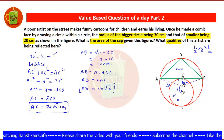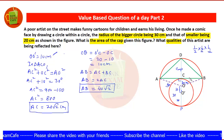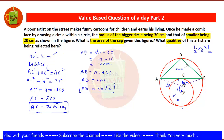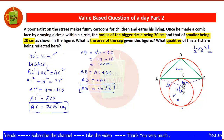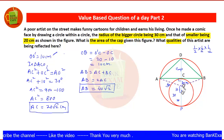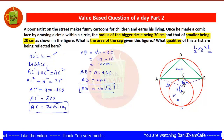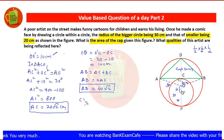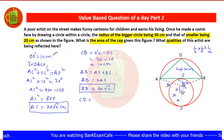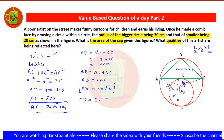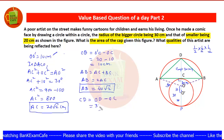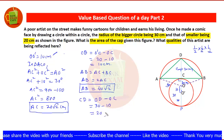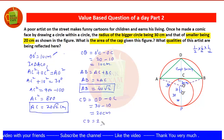Now we find the height CD. OD is a radius of the bigger circle, given as 30 centimeters, and OC is 10 centimeters. So CD equals OD minus OC, which is 30 minus 10, equal to 20 centimeters. So CD equals 20 centimeters — this is our height.